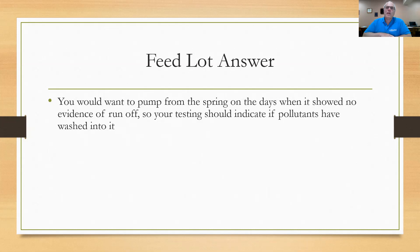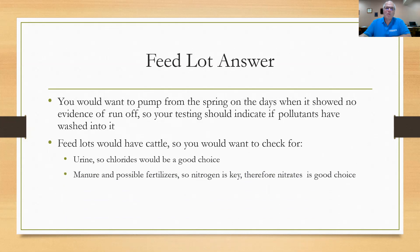Okay, so you would want to pump water from the stream on the days when it showed no evidence of runoff from the feedlot. So your testing should indicate if pollutants have washed into the stream, of course. When you take a sample, you think that the feedlots are going to have cattle. So you're going to want to check for certain things that might be pertinent to your supply here. So of course, if you have cattle, you're going to get urine into the stream on rainy days when there's runoff. So chlorides would be a good choice, of course. You're going to get manure and possible fertilizer use. So nitrogen is key. Therefore, nitrates, I think, would be a good choice. Then the last one would be that all of these pollutants are going to cause demand for oxygen. So dissolved oxygen, of course, would be a good choice. So the answer then is two. I hope you got through that one.